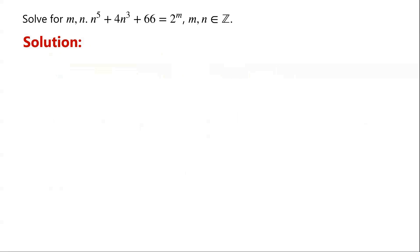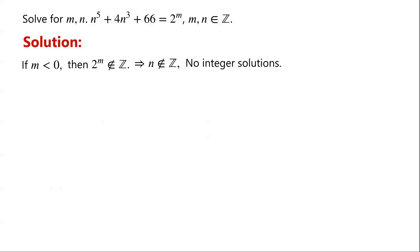We notice that if m is fixed, then the equation is a polynomial equation in n with a degree of 5. If m is less than 0, then 2 to the power of m is not an integer. This implies that n cannot be an integer, so the equation has no integer solutions when m is less than 0. Therefore, m must be greater than or equal to 0.